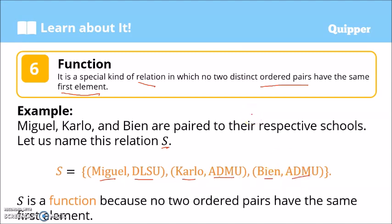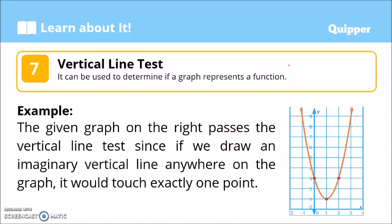Remember that when we check whether a relation is a function or not, we check on the first element. First element: Miguel, Carlo, and Bien. Notice that Miguel, Carlo, and Bien have no same, no repeated first element. Therefore, this is a function. S is a function because no two ordered pairs have the same first element.